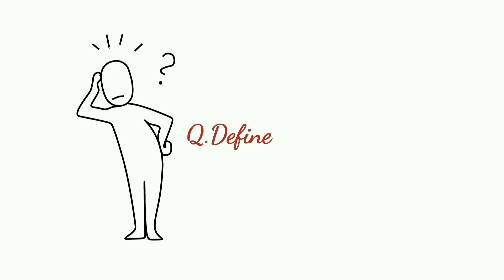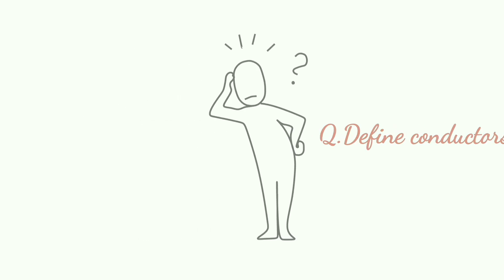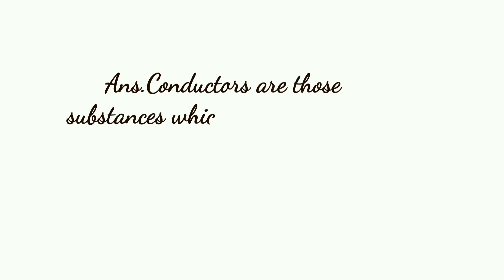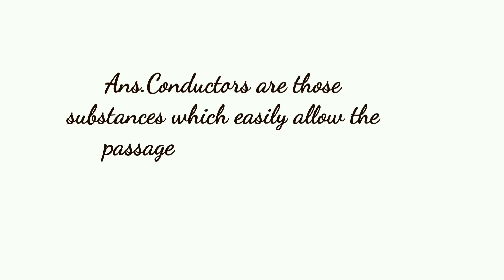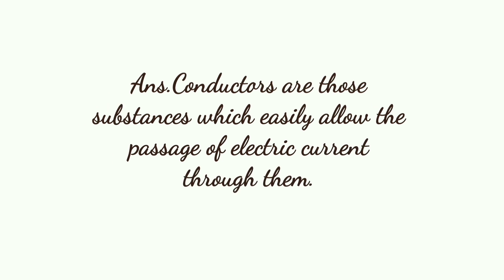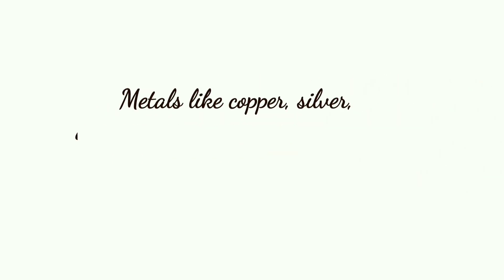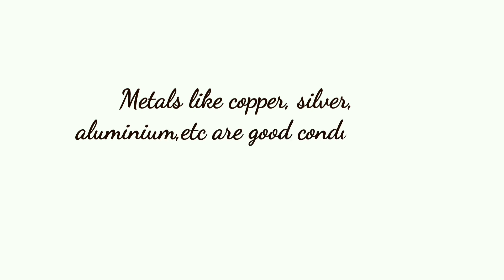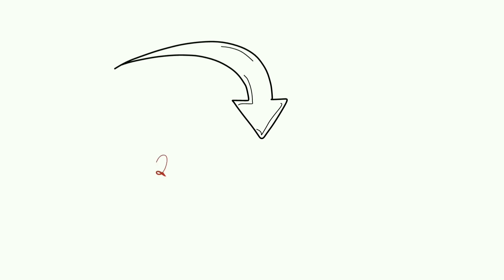Define conductors. Conductors are those substances which easily allow the passage of electric current through them. Metals like copper, silver, aluminium, etc. are good conductors of electricity.